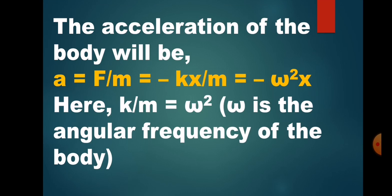So finally, restating the definition: linear simple harmonic motion is defined as the linear periodic motion of a body in which the acceleration, or restoring force, is always directed toward the mean position and its magnitude is directly proportional to the linear displacement from the mean position.